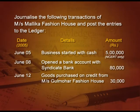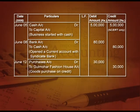Next entry: goods purchased on credit from Gul Mohar 30,000. I am purchasing goods from Gul Mohar 30,000, so purchase account debit to Gul Mohar company 30,000. The purchase account will say 'To Gul Mohar 30,000' and Gul Mohar account will say 'By Purchase 30,000'.